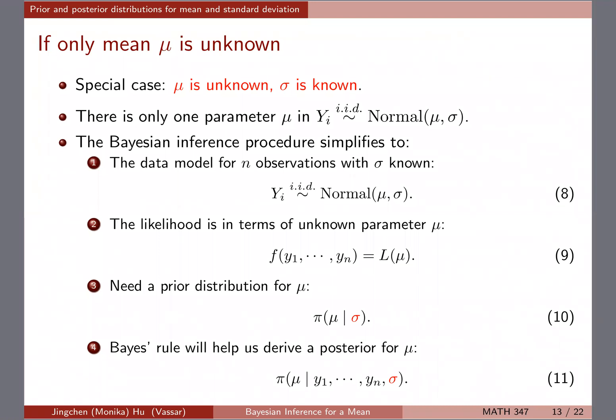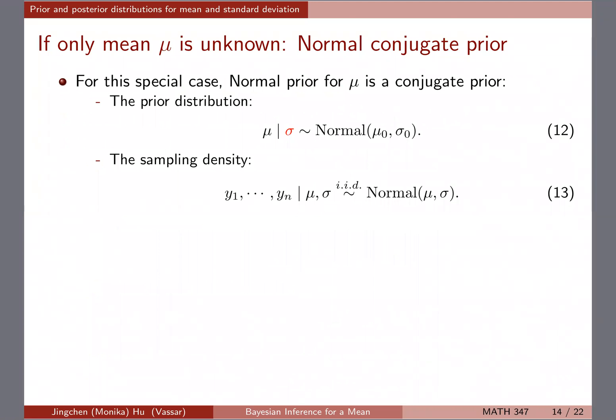For this special case, I'll state upfront: the normal prior is a conjugate prior for mu. The unknown parameter is mu, and if you give it a normal prior, you'll be able to derive its posterior as another normal distribution. That will involve some derivation. The general idea of a conjugate prior is: if you start with a family of distributions and arrive at a posterior from the same family, that's conjugacy.